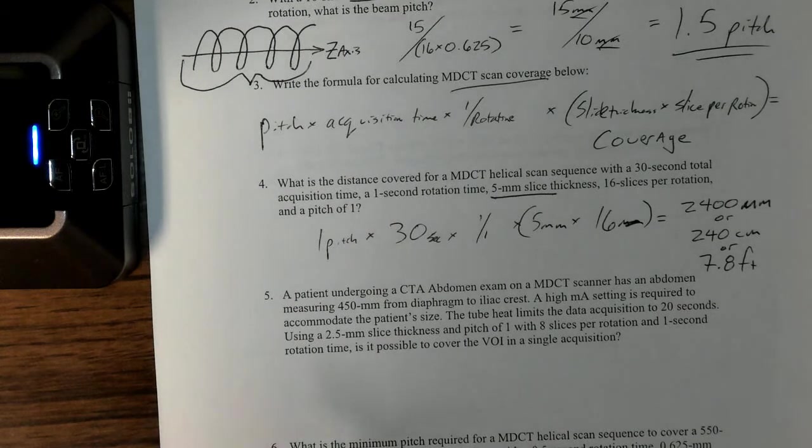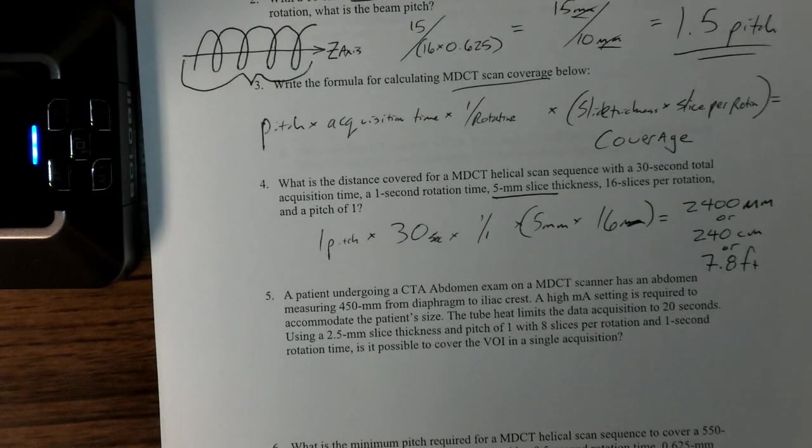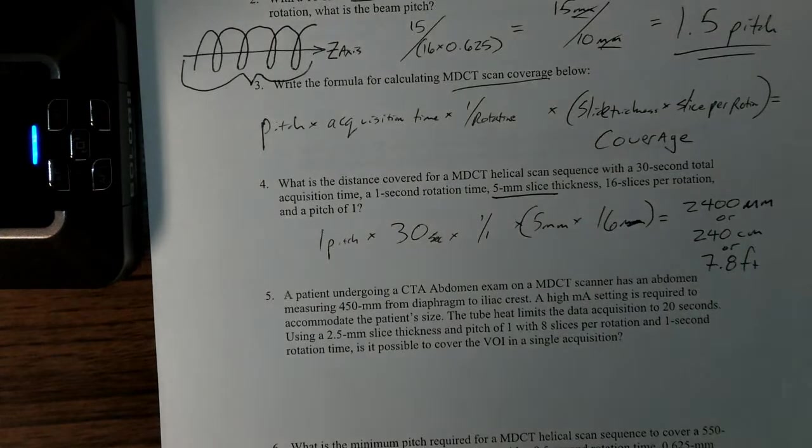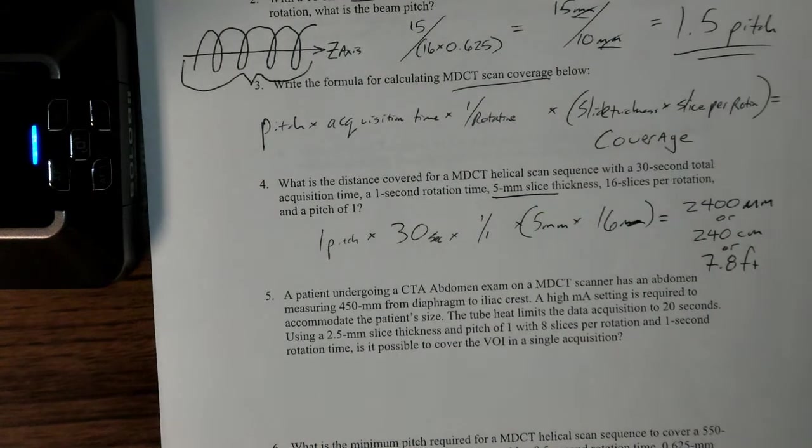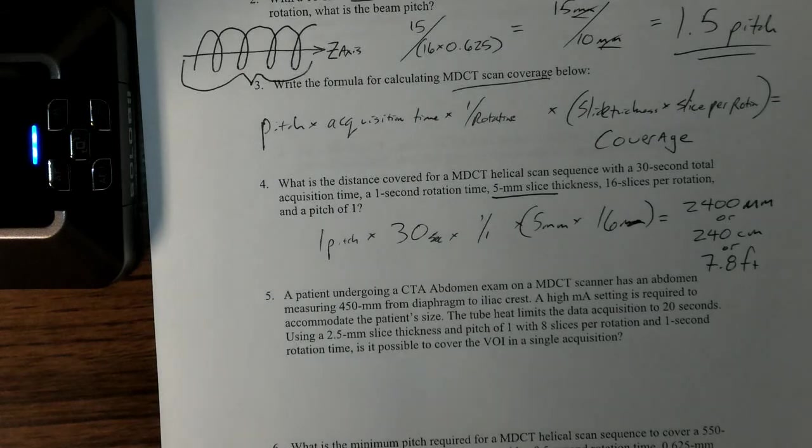Looking at problem five: patient undergoing CTA abdominal CT scan on a scanner has an abdomen measuring 450 millimeters from diaphragm to iliac crest. A high mA setting is required to accommodate the patient's size—they're a larger patient. The tube heat limits data acquisition to 20 seconds, and we used to do this quite a bit. If you're trying to get an abdominal aortic aneurysm image on a large patient, you might hit the tube heat limits, so we only have 20 seconds.